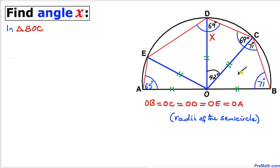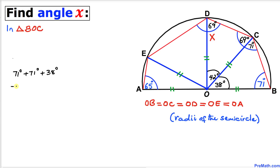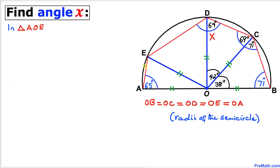Let's focus on triangle BOC once again. The sum of all three angles must equal 180 degrees. Therefore this angle has to be 38 degrees, because 71 degrees plus 71 degrees plus 38 degrees gives us 180 degrees.